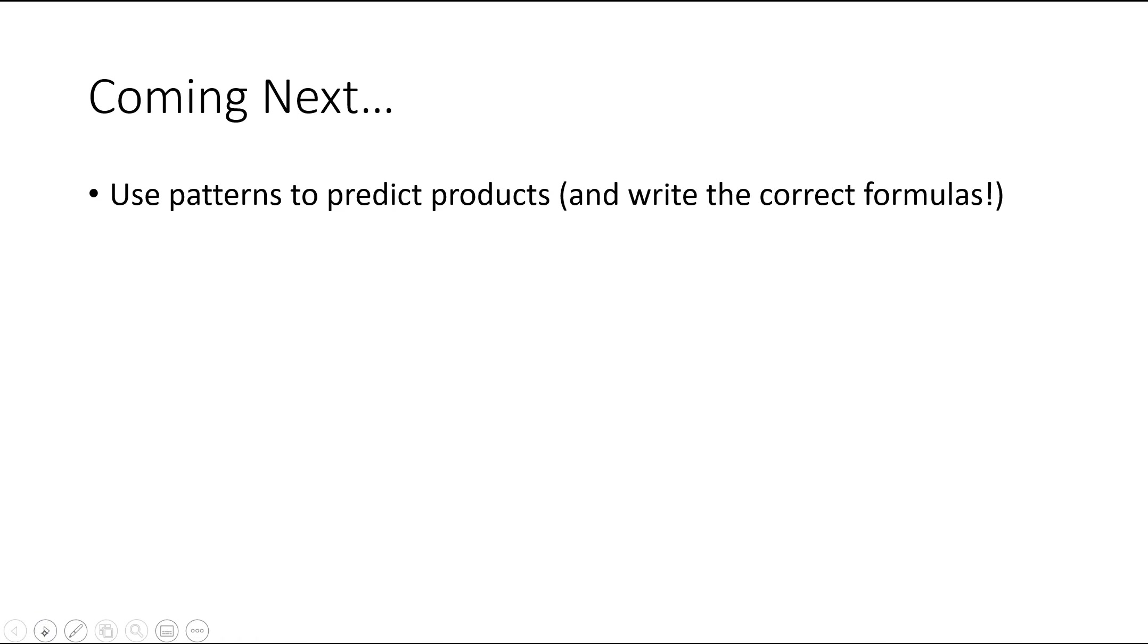But speaking of what's coming next, what we want to be able to do after we master just identifying the type of reaction is using those patterns to predict products. So if I gave you, for example, let's say magnesium metal, and I said we added it to hydrochloric acid, what would you predict we would produce? And so what we would look for is, what pattern does this represent? We have A and BC. To me, that looks like it would be a single replacement reaction, in which case the A and the B would swap places. So I would get magnesium chloride and hydrogen gas. So we want to get, eventually, to the point where we can predict what those are. That will come later. I just kind of want to point out that's where we're headed.